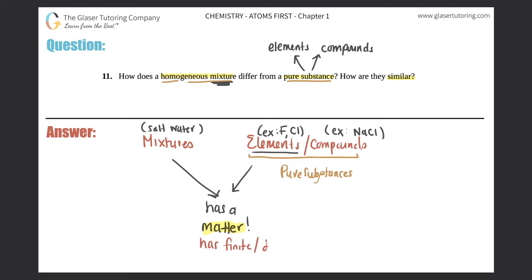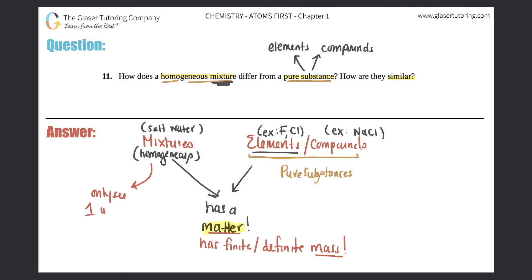So that's one similarity: they all have matter, they all take up space, and they have a definite or finite amount of mass. Another similarity comes from the fact that we're specifically talking about a homogeneous mixture. A homogeneous mixture is when you only see the mixture as one unit, one color — you cannot tell the difference between the two compounds in it. For example, with salt water, you can't really see where the salt is within the water.